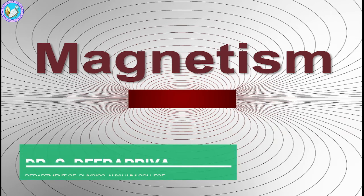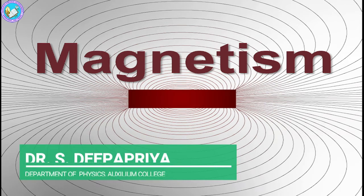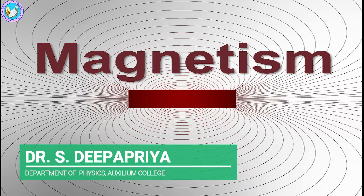Good morning students. Today we are going to discuss about magnetism. Magnetism is nothing but it is a force exerted by a magnet when they attract or repel each other. We usually use this term which is called attraction and repulsion, where this magnetism is caused by the motion of electric charges.